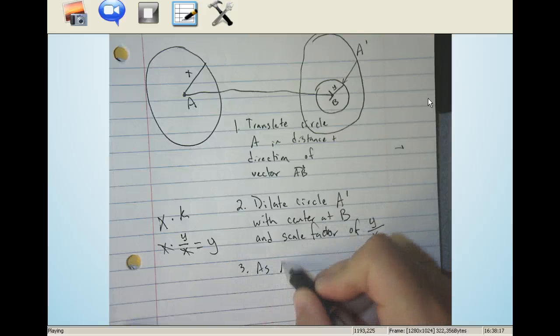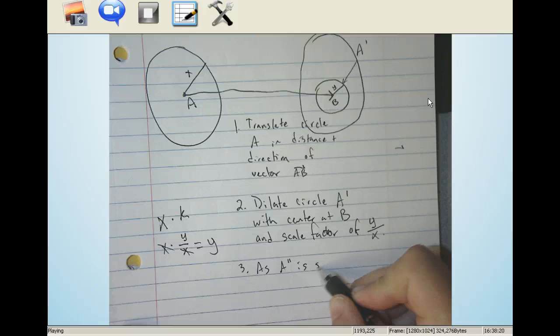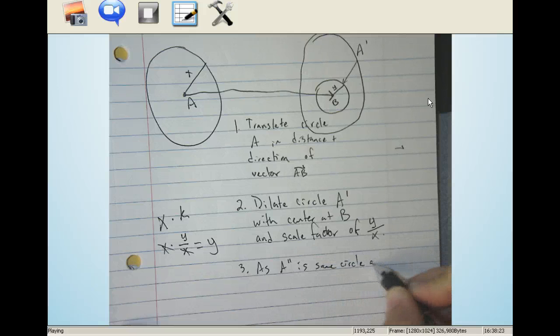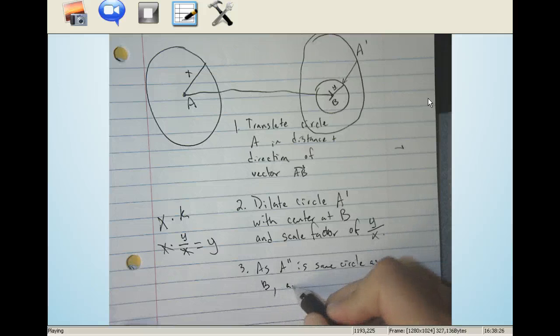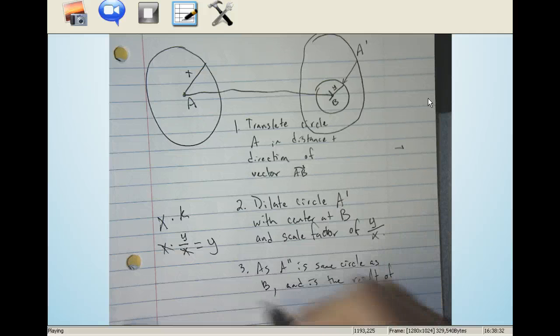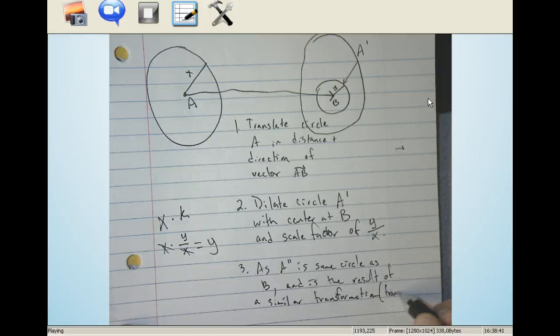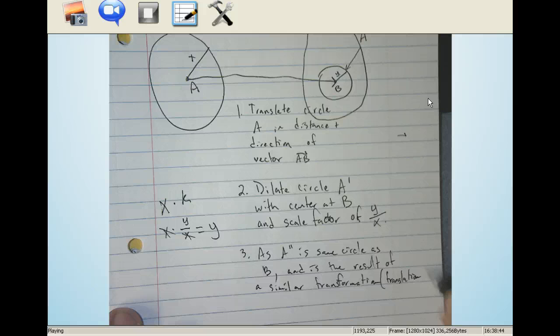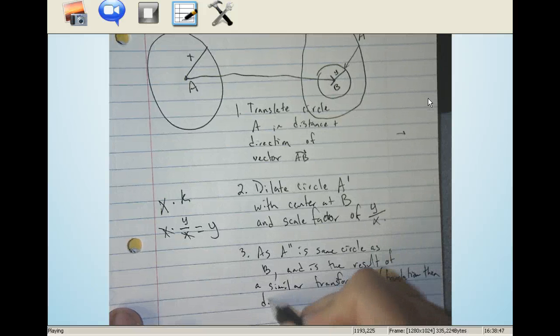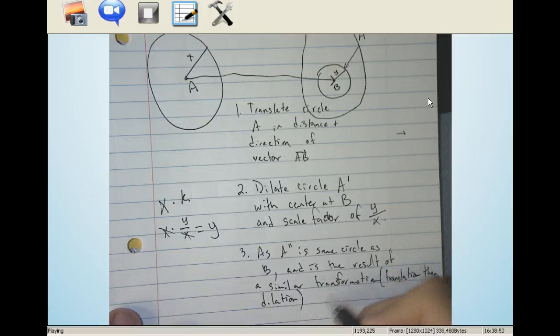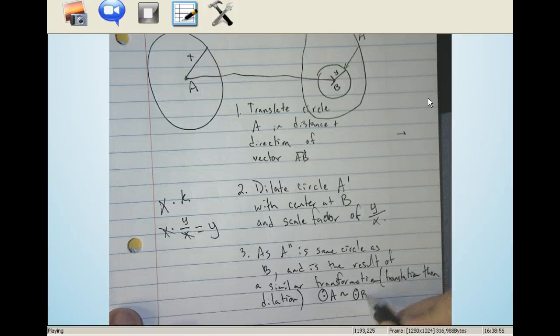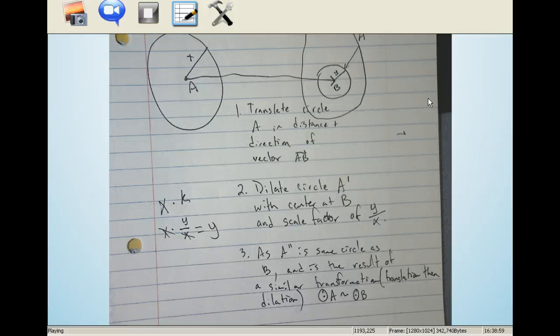So we would say as A double prime is the same circle as B. And is the result of a similar transformation, which was a translation, then dilation. Then circle A is similar to circle B. And that will be true for any two circles.